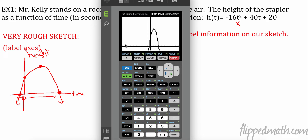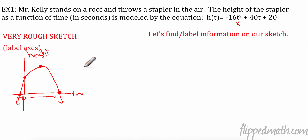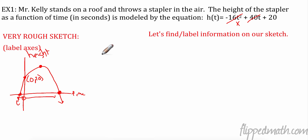One intercept is at negative time — we don't care about that. We have a positive-time intercept, a vertex, and a y-intercept. We already know the y-intercept: when t = 0, height = 20. So that point is (0, 20) — zero seconds, 20 feet. That's his initial starting height.